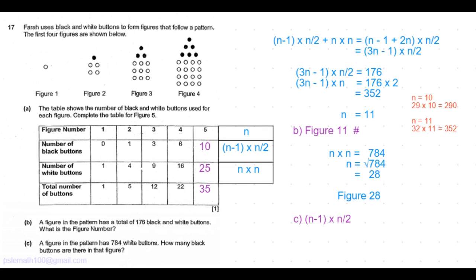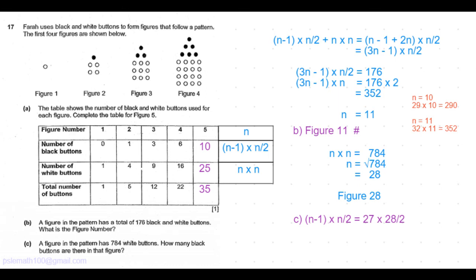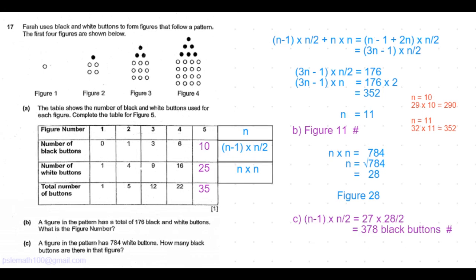The question is, how many black buttons are there in that figure? So n equals 28, n minus 1 is 27 times n by 2, which is 28 by 2, equals 378 black buttons. So that's the answer to part C of the question. So this is a tricky question from Henry Park.